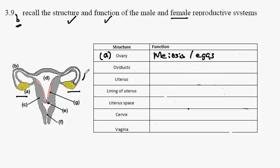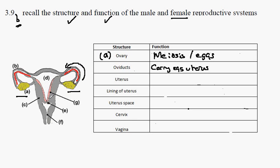The eggs are carried down tubes called the oviducts. The oviducts carry the eggs to the uterus, but this is also the location where fertilization might take place. So fertilization — sperm cells meeting egg cells — occurs in the oviduct, not in the uterus space.